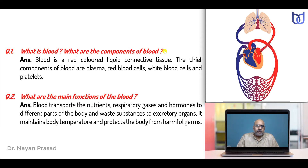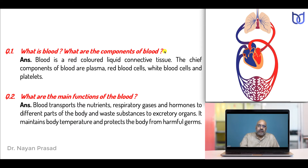One of the important questions: what is blood? What are the components of blood? In the circulatory system, blood circulation includes three major components: the heart, blood, and blood vessels. Blood is a red colored liquid connective tissue. The chief components of blood are plasma, red blood cells, white blood cells, and platelets. Blood thus forms the chief transporting medium of the body.